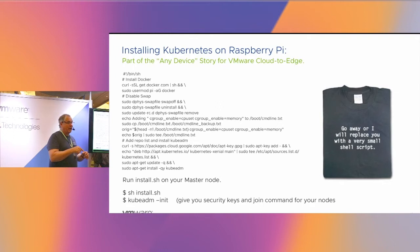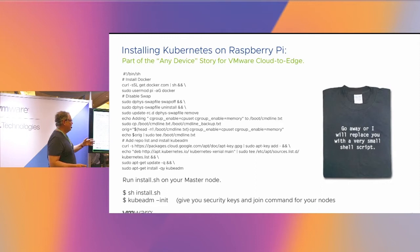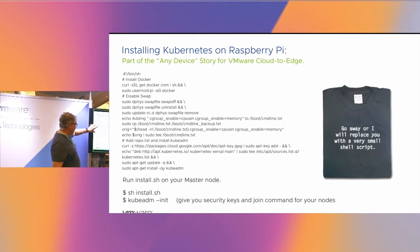Kubernetes will not even launch on a low memory system if it detects swap. So you have to turn off swap in order to just get Kubernetes to launch — at least they give you that error. They actually tell you if you have swap to disable it. So we disable swap, and that's the code to make sure your swap is disabled upon reboot.